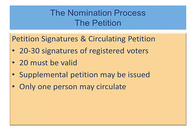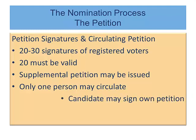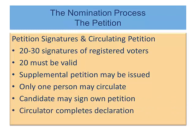Only one person may circulate the petition, which may be circulated by the candidate or by any other person qualified to register to vote in the election. The candidate may sign his or her own petition. After all signatures have been gathered, the circulator must complete, date, and sign by hand the declaration of circulator.